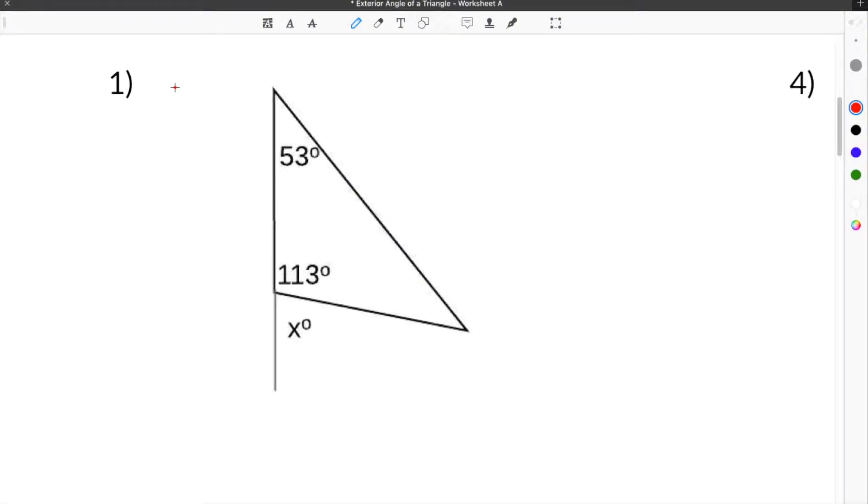We're looking at our first problem here, which gives us our triangle and our exterior angle here. You can see we have our triangle, and then we have a line that's extended from one side of the triangle, and then we're trying to find the angle in between that line and the side of the triangle.